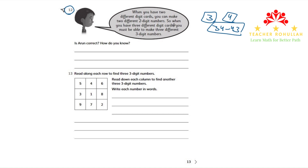But he says, so when you have three different digit cards, you must be able to make three different three-digit numbers. Now the question is if Arun is correct or not. How do you know?